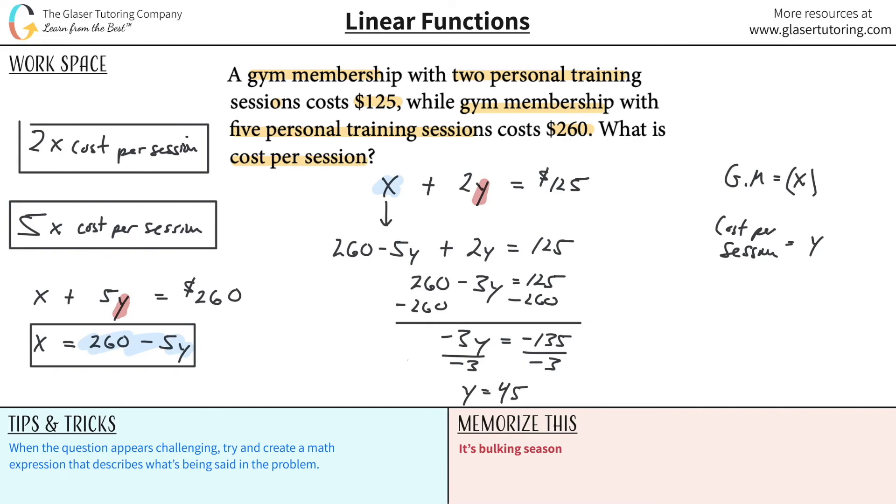And now Y will equal 135 divided by 3. It's going to be positive 45. And there is, now what did Y represent? Y represented the cost per session. What did they ask us? The cost per session. So guess what? We're done. That is the cost per session.